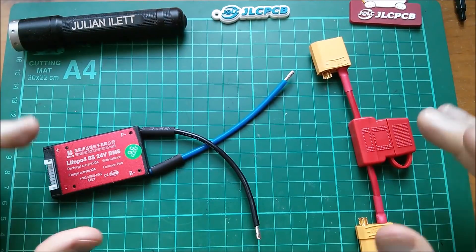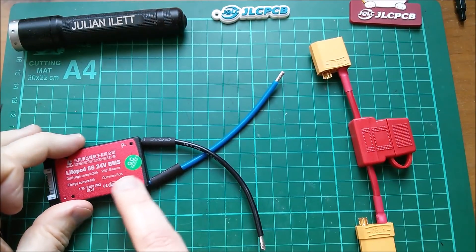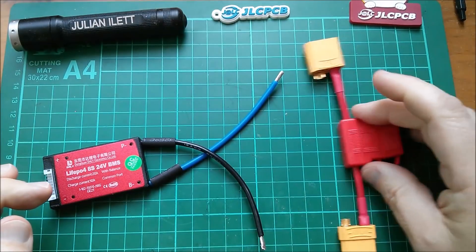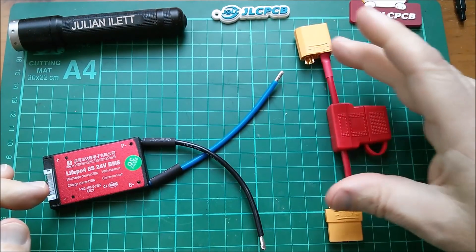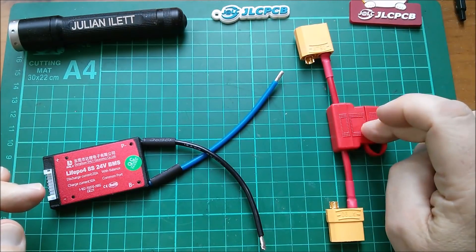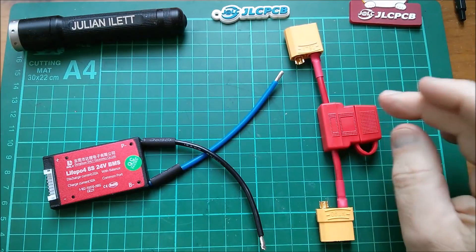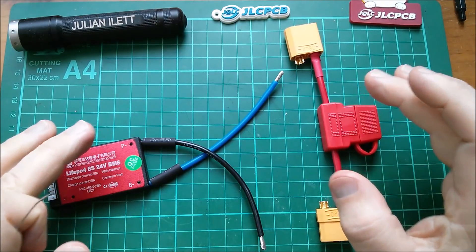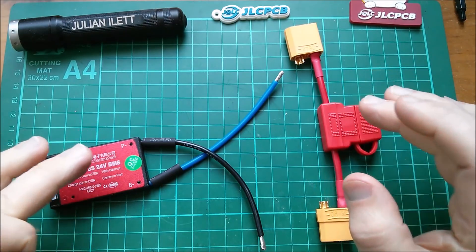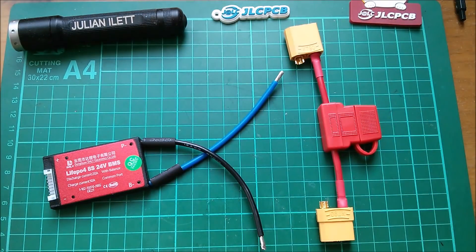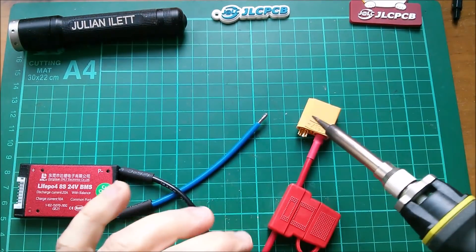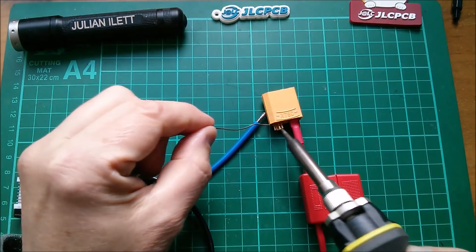Good morning all, time to solder my BMS, the high current stuff, into basically an extension piece here. Put a fuse in there as well and that means I can connect my solar panel to the battery and get it charging. Right, let's put some solder in here.